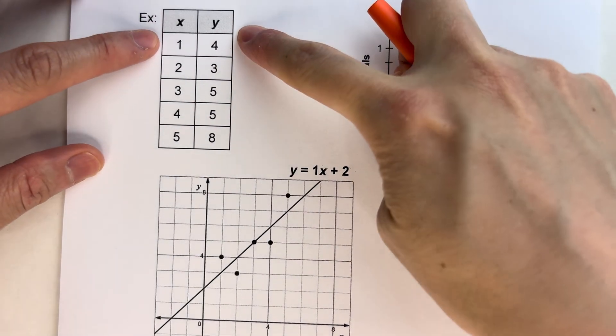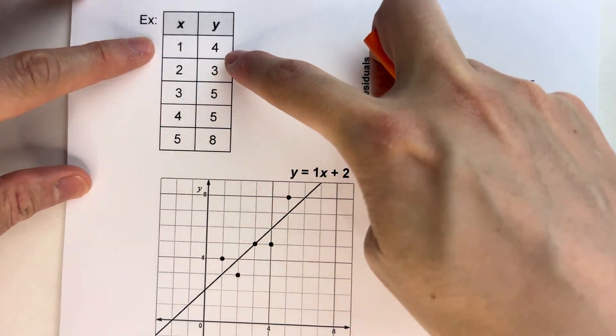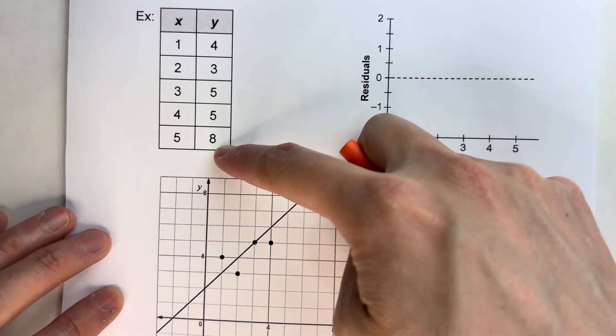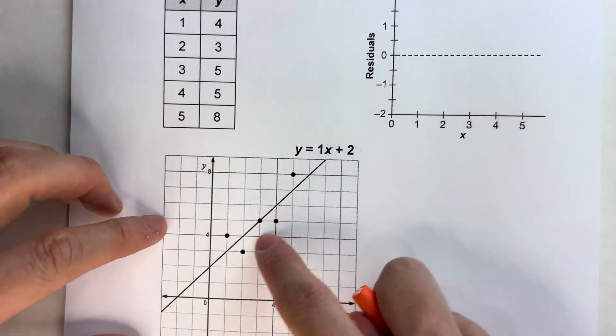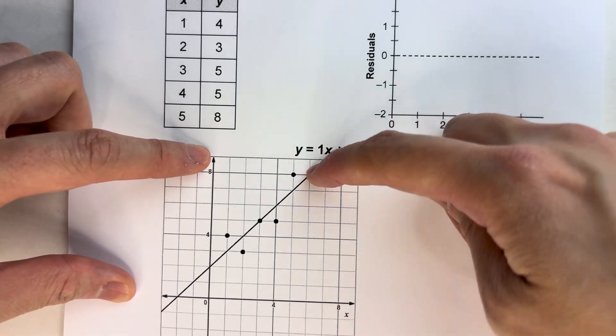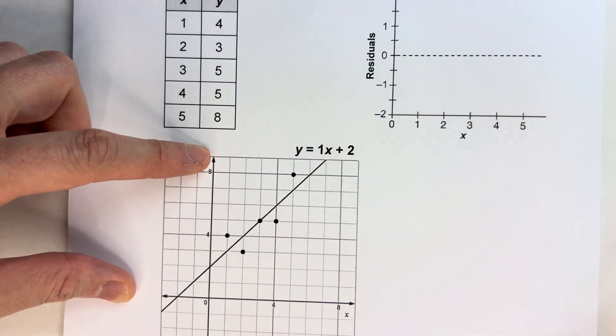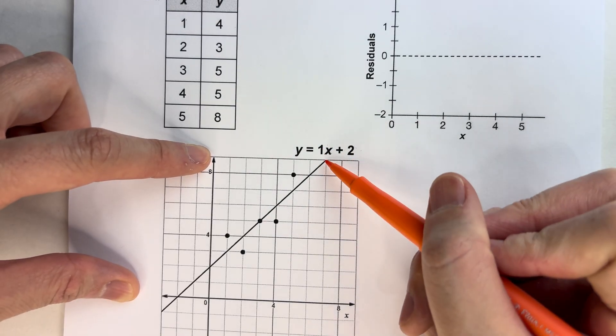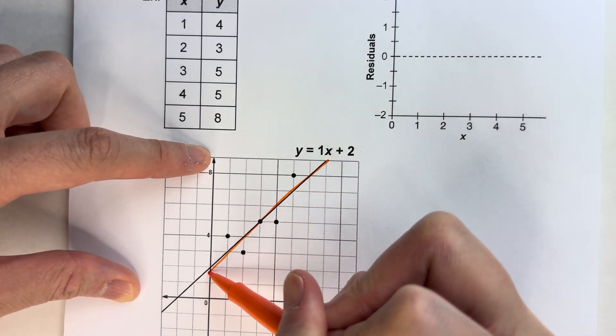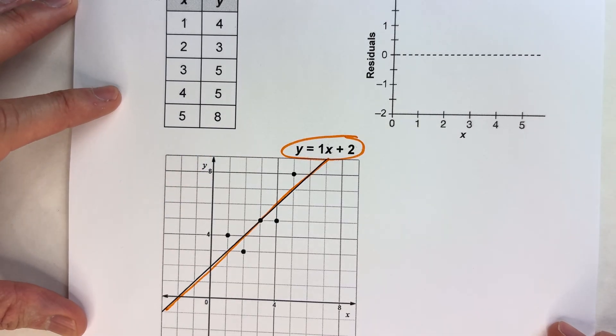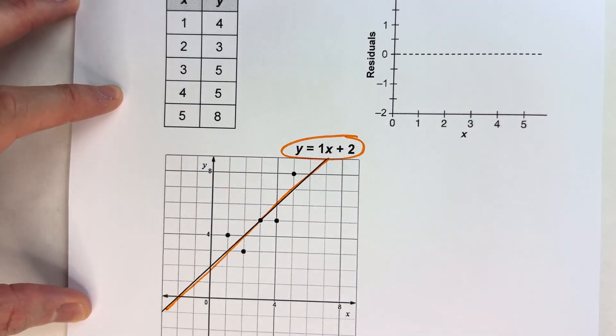So let's say we have some data. Here's our x values, here's our y values. And let's say this is what we collected, so this is our actual data. Then we plotted that data on a scatter plot and we drew a best fit line to represent that data. So this line here represents our data. And I wrote an equation for that trend line too, so that way we know mathematically what that line is.